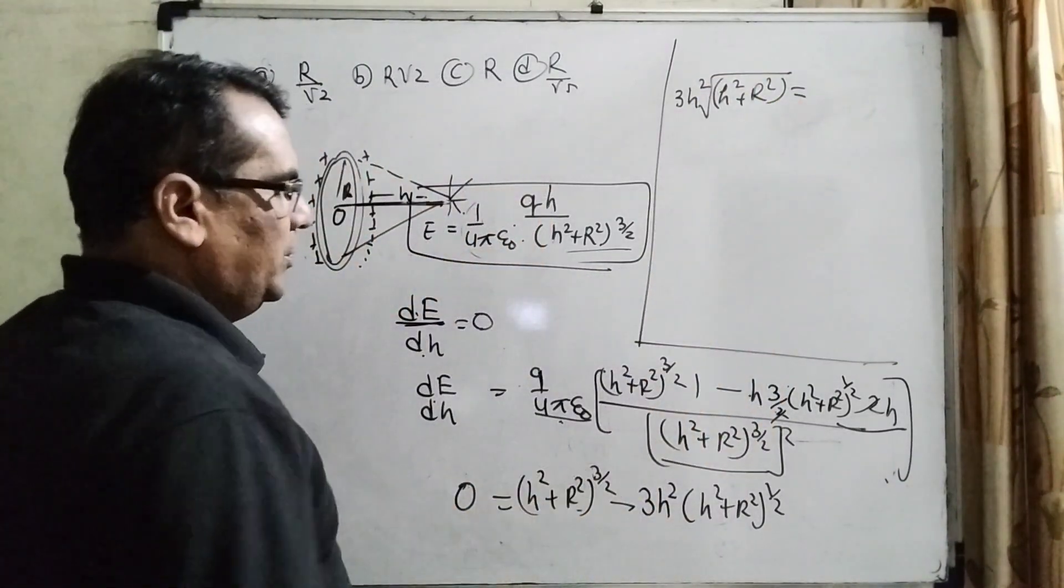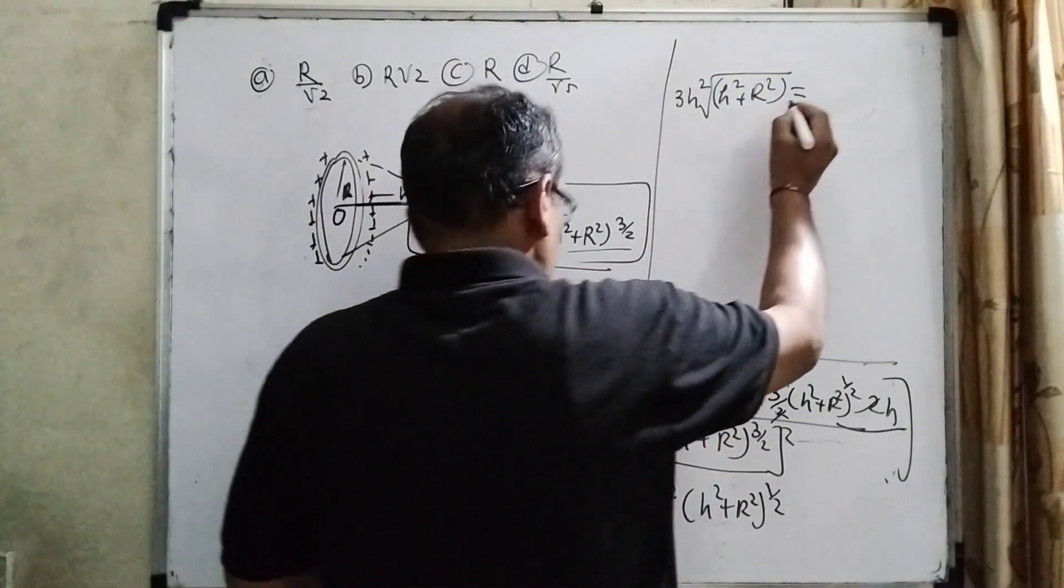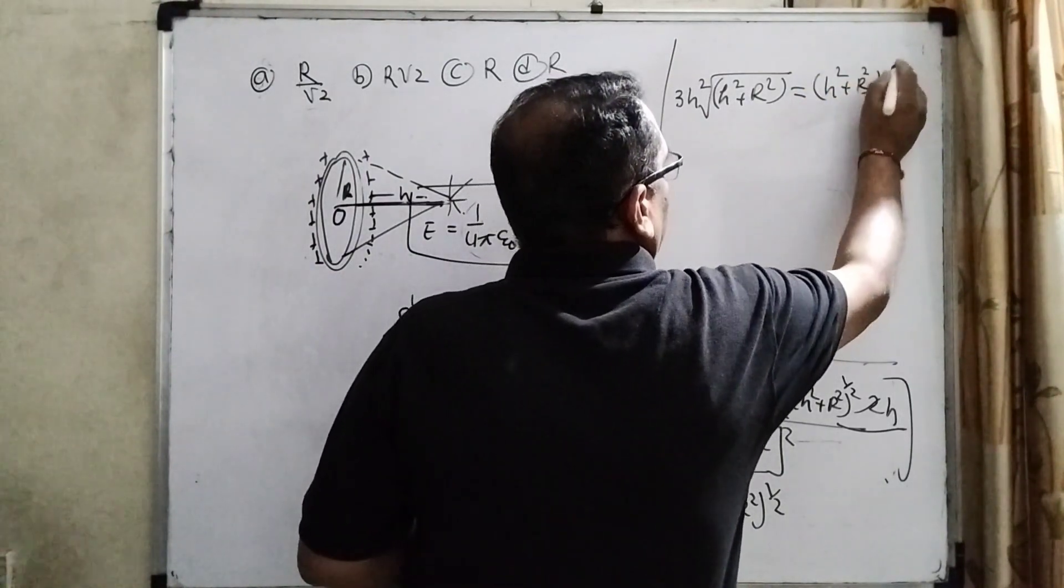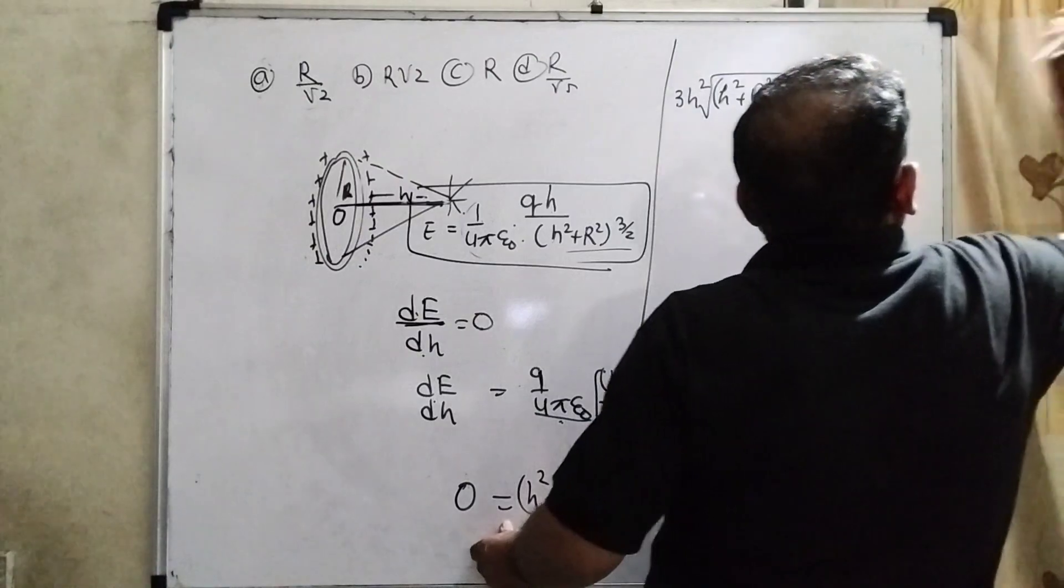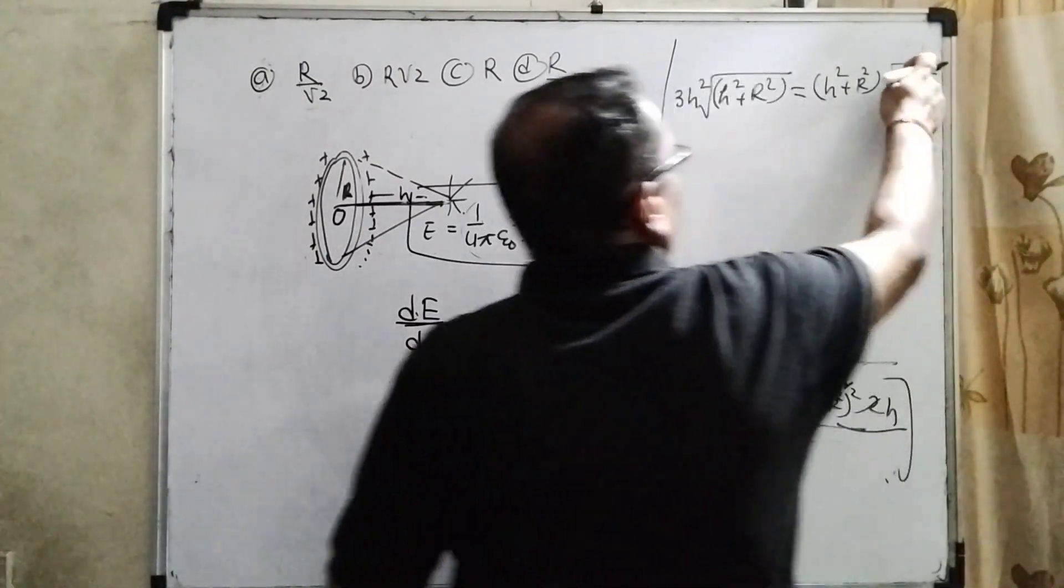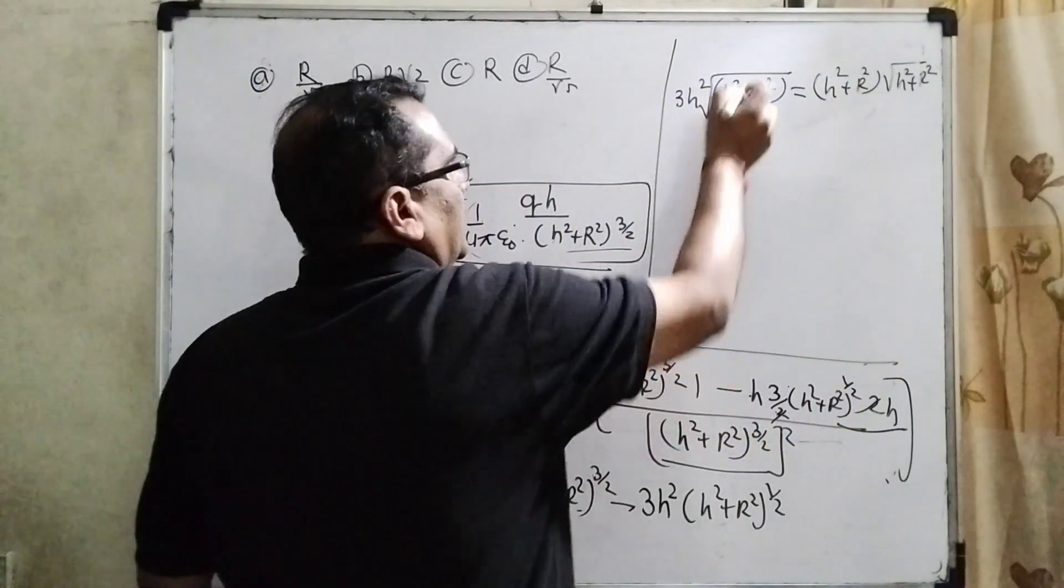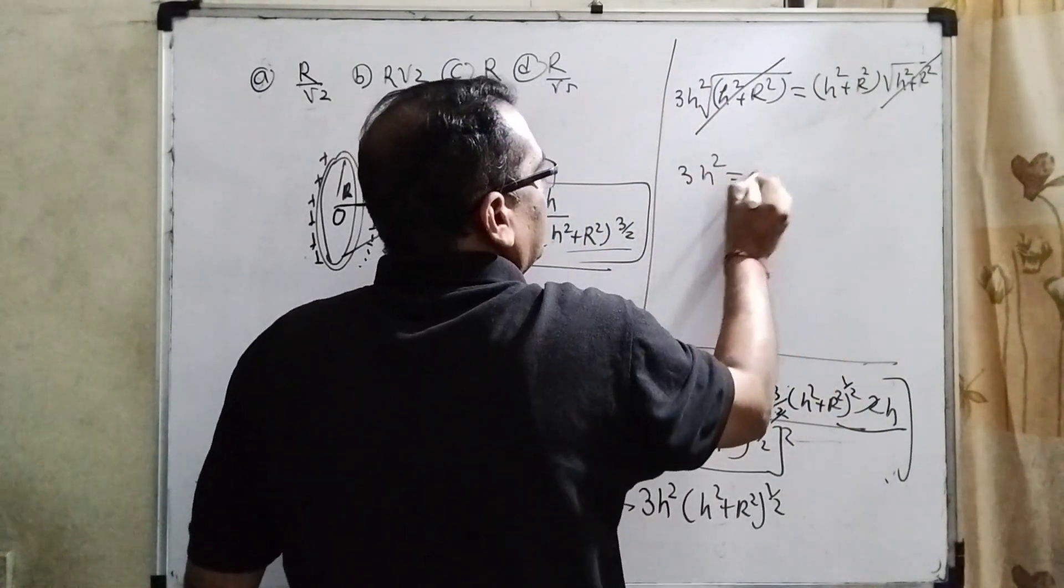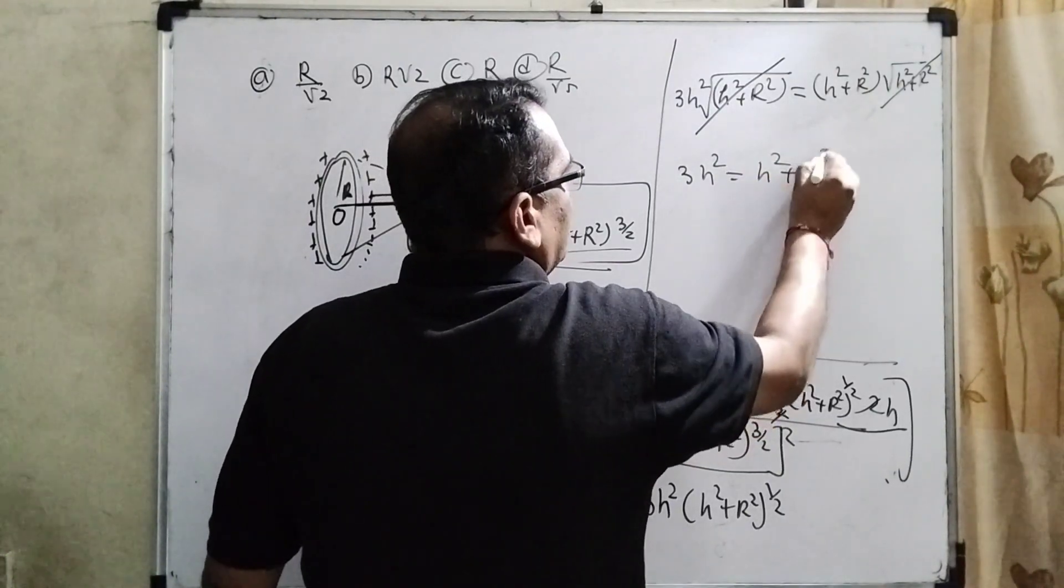Okay. Here, 3/2 power: 3/2 means (h² + R²) times root(h² + R²). You know that 1/2 plus 1 is 3/2. So this term and this term cancel out. 3h² equals h² plus h² plus R².